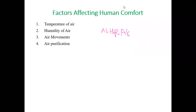As per ASHRAE - that is the American Society for Heating, Refrigerating and Air Conditioning Engineers - the definition is that human comfort is nothing but the set condition of a mind where the human will be satisfied with the surrounding thermal conditions. One may feel comfortable at 21 degrees Celsius or 50% humidity, while another person may feel comfortable at a different temperature and humidity condition.